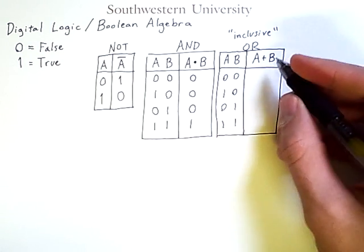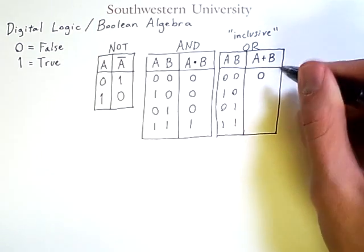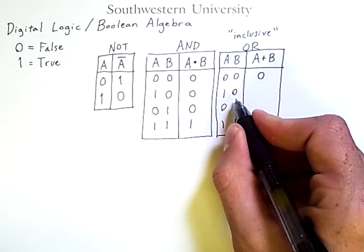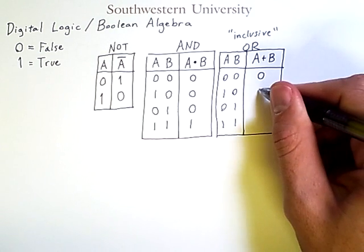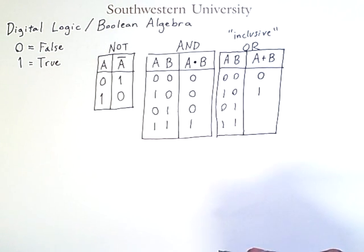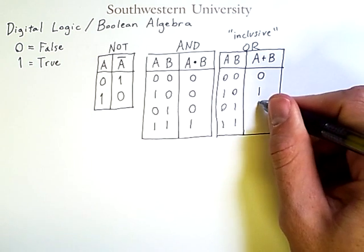So if they are both zero, then the answer to my question is false, and I put a zero here. If A is one and B is zero, then at least one is a one. So I put a one as my result, and that holds true regardless of the order of the variables.